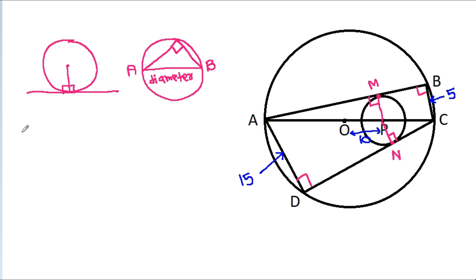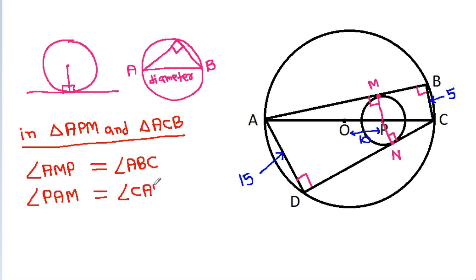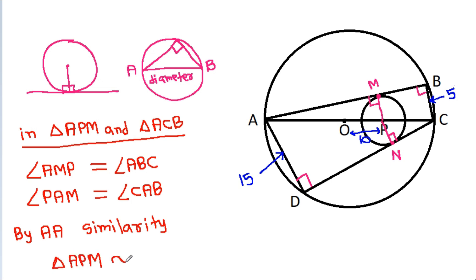Now in triangle APM and triangle ACB: angle AMP is equal to angle ABC, which is 90 degrees, and angle PAM is equal to angle CAB. So by angle-angle similarity, triangle APM is similar to triangle ACB.